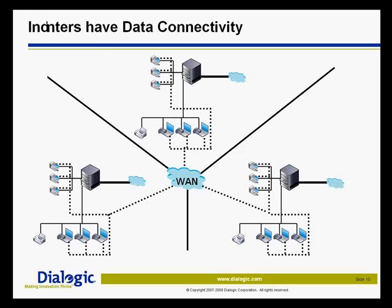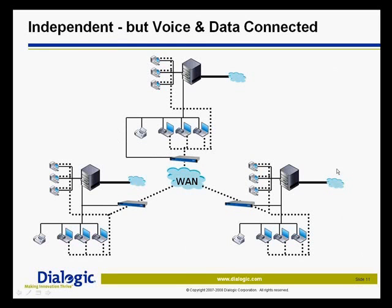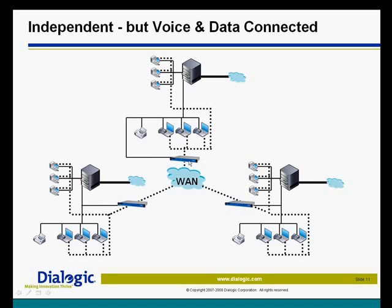Now, this slide — number 11 — is where you start to see the appearance of some Dialogic product and some VoIP technology in order to allow these contact centers to actually talk to each other. You can see these blue boxes that appeared in the drawing — those are media gateways. Those devices have both a solid line and a dotted line connected to them, and they are actually doing the translation from TDM voice over to VoIP. Just by dropping these in — and I want to make sure these are not routers — they are positioned in between the existing contact center infrastructure and the WAN. These are hanging on the same LAN, and they understand how to translate TDM traffic to VoIP.